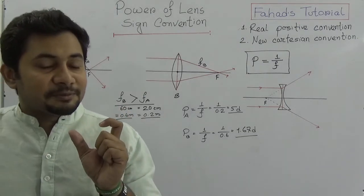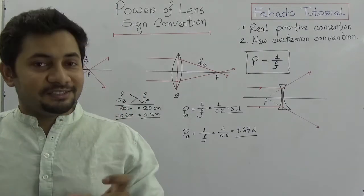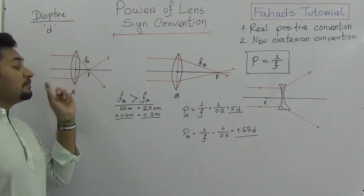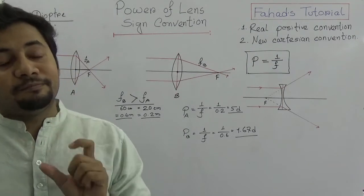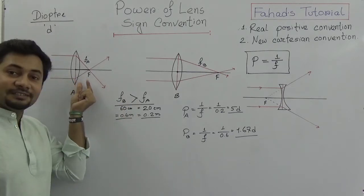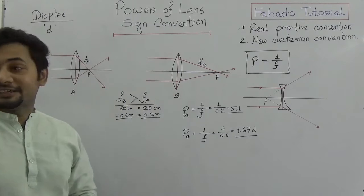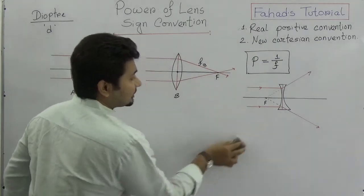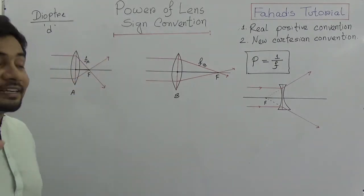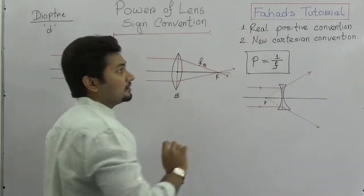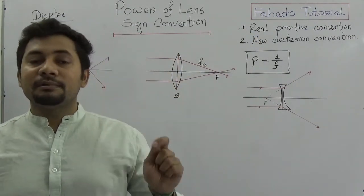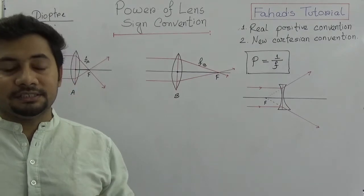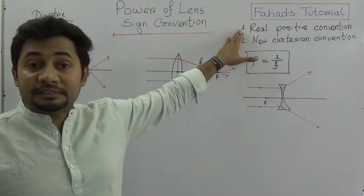The power of a lens is the capacity to make light converge or diverge from a parallel beam. Now let's think about sign convention. There are two types of approaches: number one is the real positive convention, and number two is the new Cartesian convention. In this video, I'm going to explain the real positive convention.